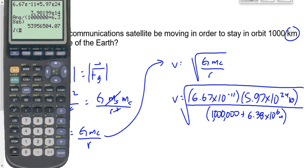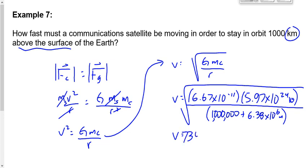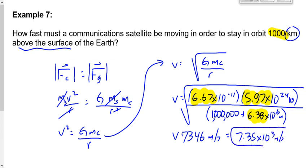We forgot to square root it, so taking the square root gives us 7.0734... meters per second. Rounding to 3 significant figures — the minimum of our inputs — the final answer is 7.35×10³ meters per second. So this satellite must travel about 7,300 m/s to stay in orbit at that height.